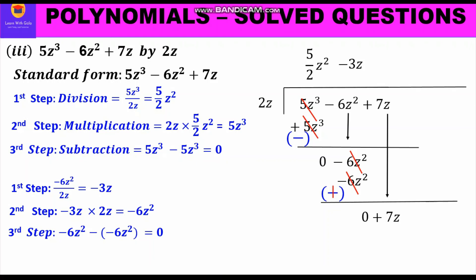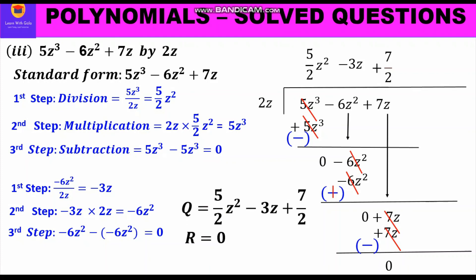We bring down 7z and go through the three-step approach again. Division: 7z divided by 2z gives 7/2. Multiplication: 2z times 7/2 gives 7z, written below the 7z we brought down. Subtraction: one is positive, one is negative — the remainder is 0. The quotient is 5/2 · z² minus 3z plus 7/2, and the remainder is 0.